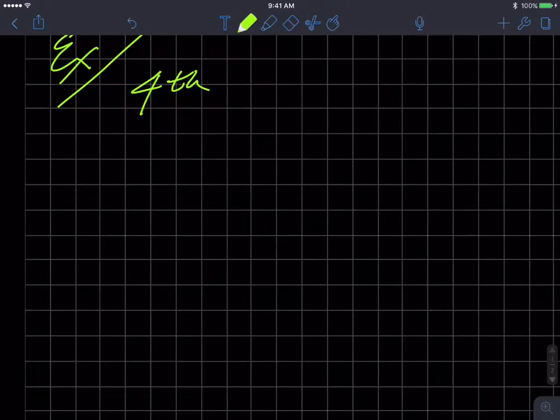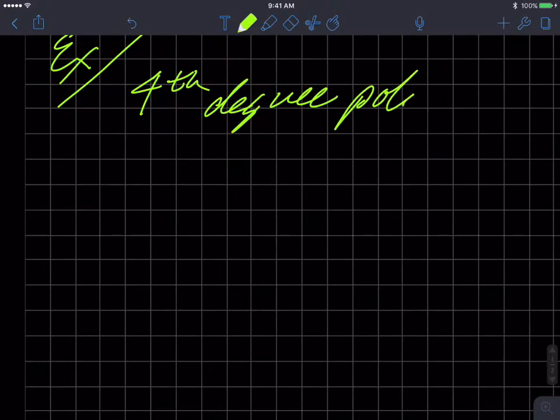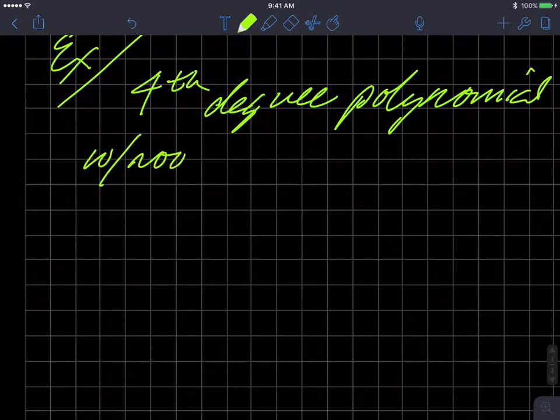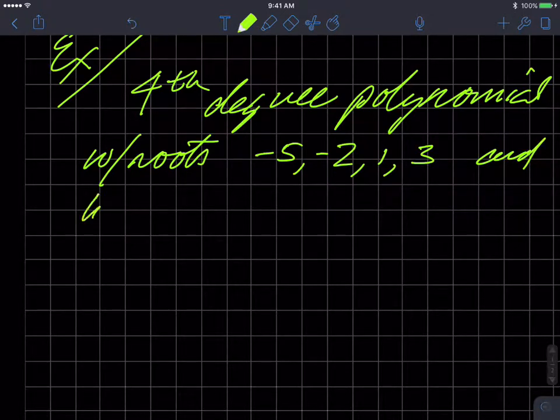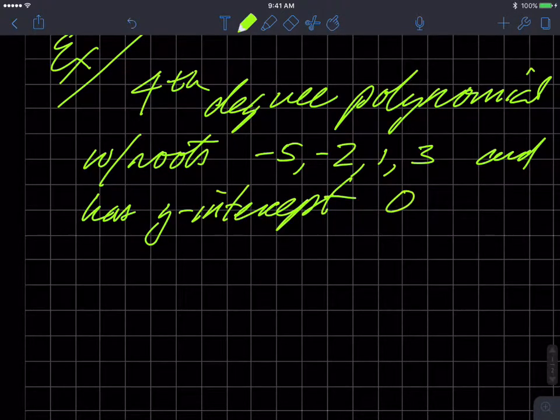You're given a fourth degree polynomial and it has roots at negative five, or of negative five, negative two, one, and three, and has y-intercept zero, comma, 15.